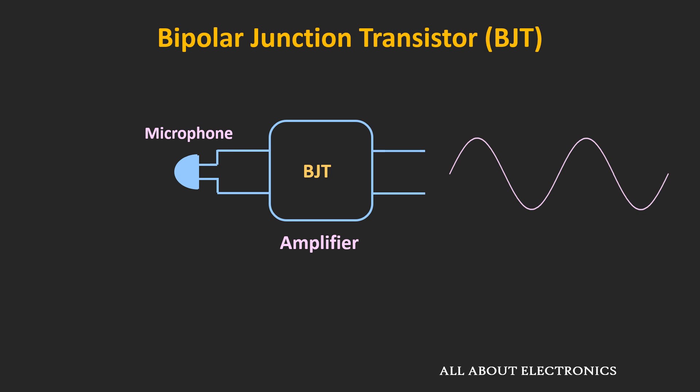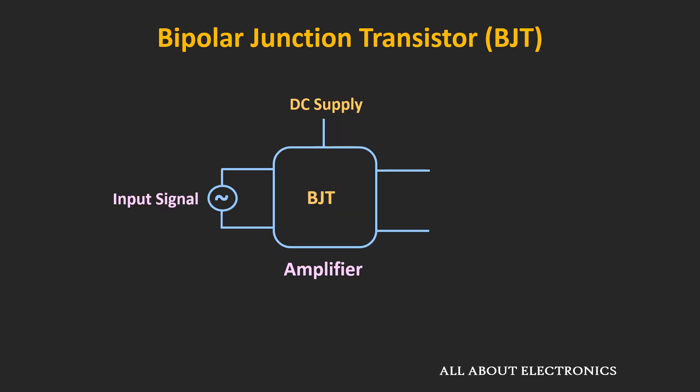To use the BJT as an amplifier, we need to bias it. When we apply the input signal to the BJT, it should not affect the biasing condition of the BJT. Similarly, the biasing voltage should not affect the input signal. To isolate the input signal and the biasing voltage, this coupling capacitor is used — the input signal is applied to the BJT via this coupling capacitor.